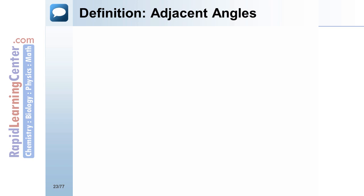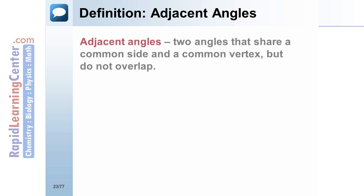Definition: Adjacent Angles. Adjacent angles are two angles that share a common side and a common vertex but do not overlap. Angles ABF and ABC share a common vertex and a common side. Therefore, they are adjacent angles.